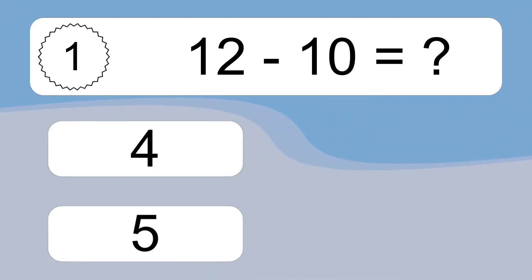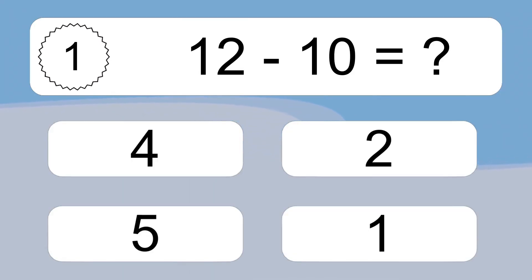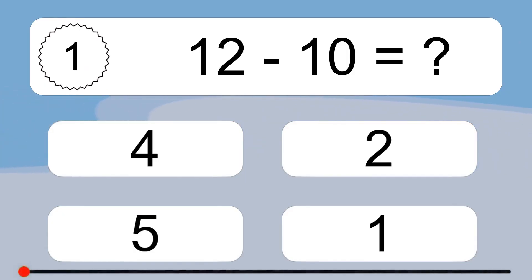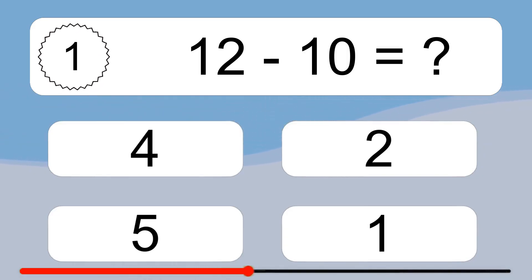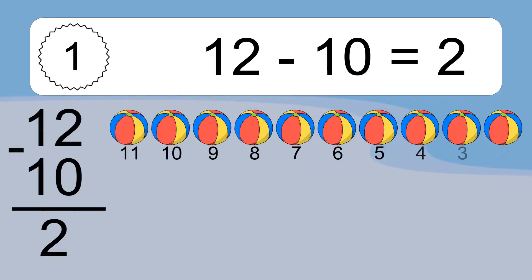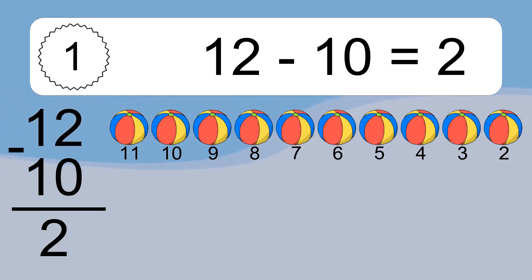12 minus 10 equals what? 12 minus 10 equals 2. Let's count it: 11, 10, 9, 8, 7, 6, 5, 4, 3, 2.